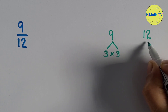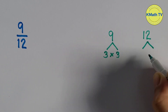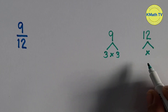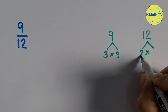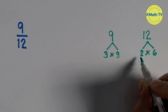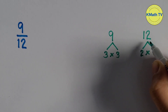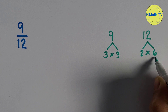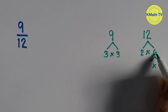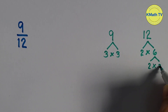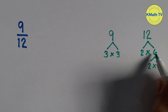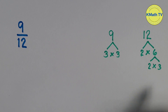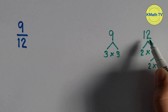Now let's find the prime factors of 12. What numbers can we multiply to get the product 12? If we multiply 2 and 6, the product is 12. 2 times 6 equals 12. 2 is a prime number, but 6 is a composite number, so we need to get the prime factors of 6. If we multiply 2 and 3, the product is 6. 2 times 3 equals 6, and 6 times 2 equals 12. These are the prime factors of 12.